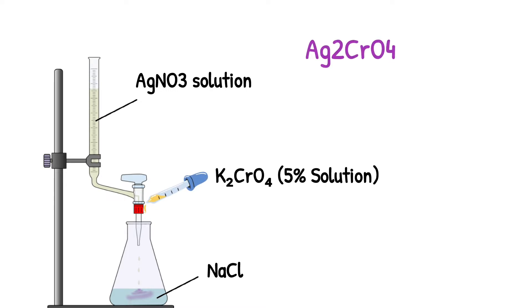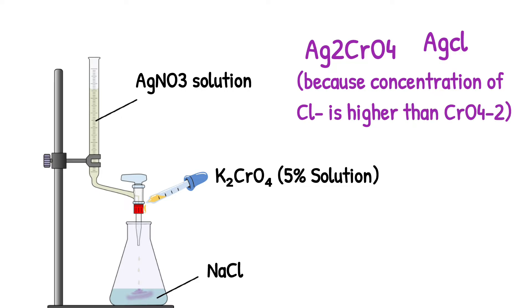As per the KSP value, Ag2CrO4 should precipitate out first, but AgCl precipitate appears first because the concentration of Cl- ion is much higher compared to CrO4^2-. At this endpoint, all Cl- ions will react with AgNO3 and form AgCl precipitates, which is white in color and also known as primary precipitate.